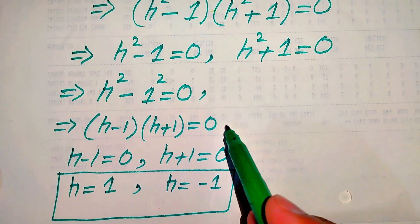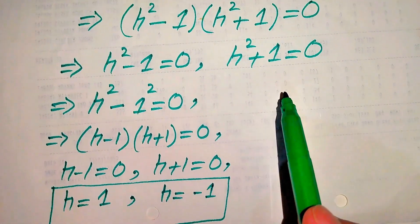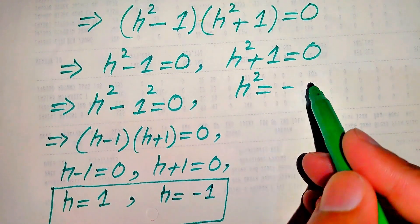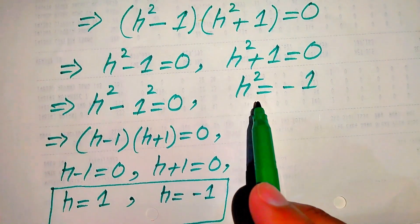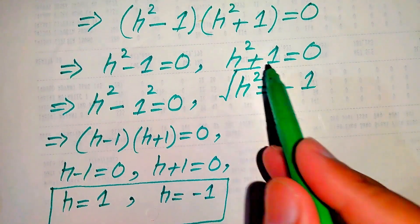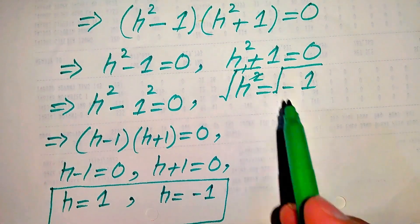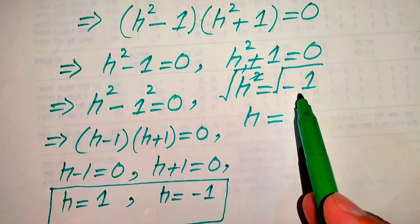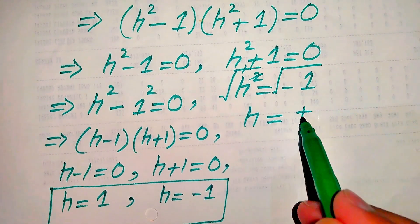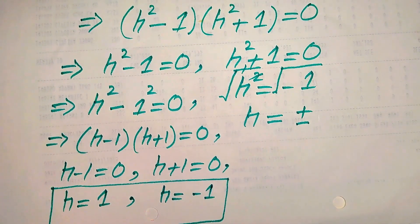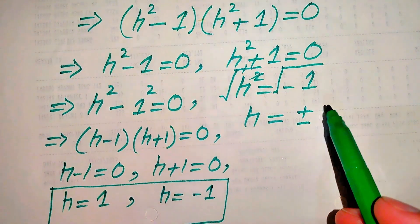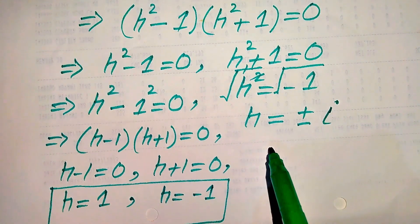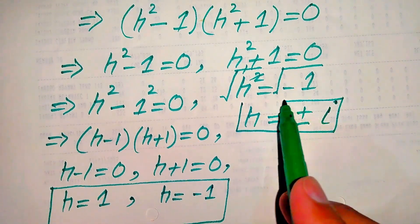To find the other two roots we solve the second case. We move plus 1 to the right hand side to get h squared equals minus 1. Taking the square root on both sides, the square cancels and we get h equals plus or minus the square root of minus 1. Since the square root of minus 1 equals iota, these are the other two complex roots of the given equation.